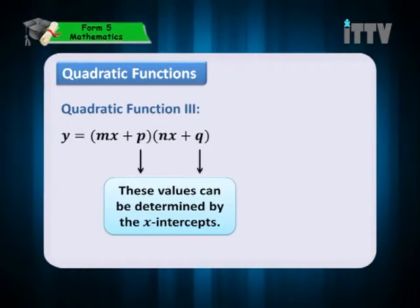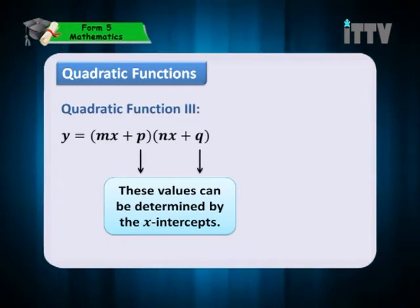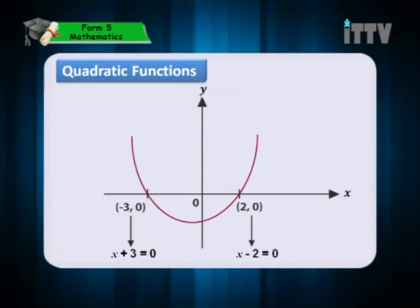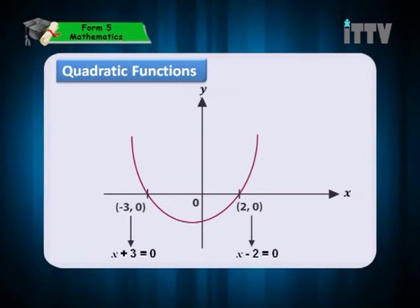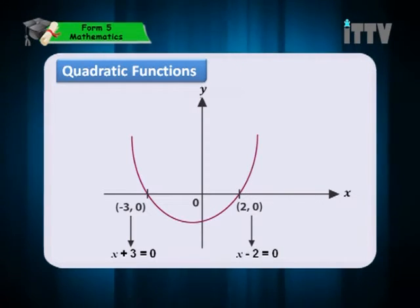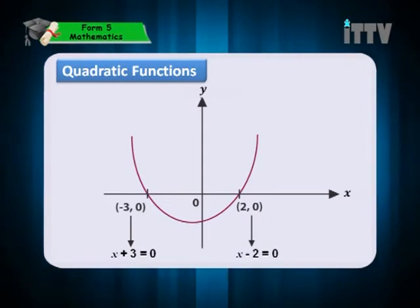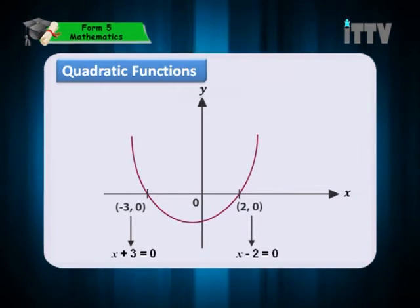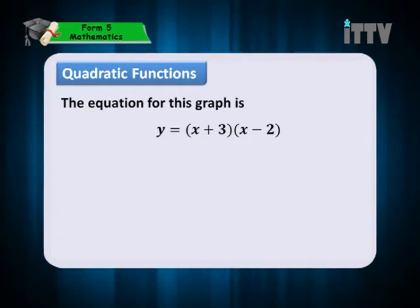The quadratic function can also be in type 3: y equals to mx plus p, multiplied by nx plus q. These values can be determined by the x-intercepts. Take a look at this example — the x-intercepts given are negative 3 and 2. So, since x is negative 3 and x equals 2, we can form back the factors x plus 3 and x minus 2. The equation for this graph is y equals to x plus 3, x minus 2.